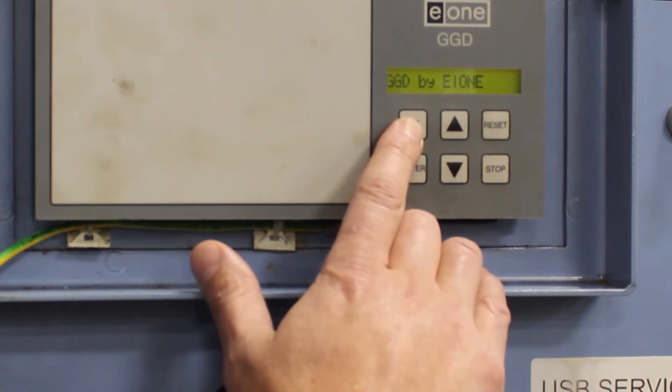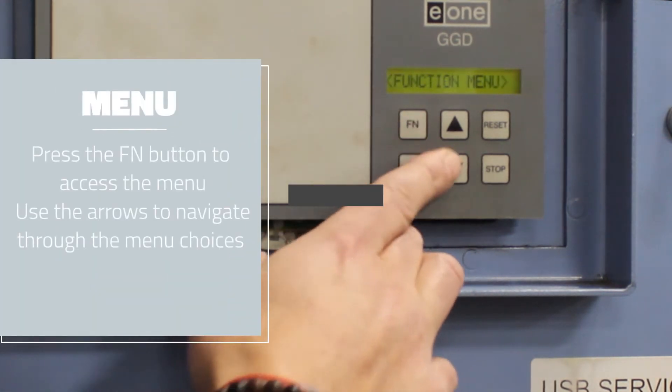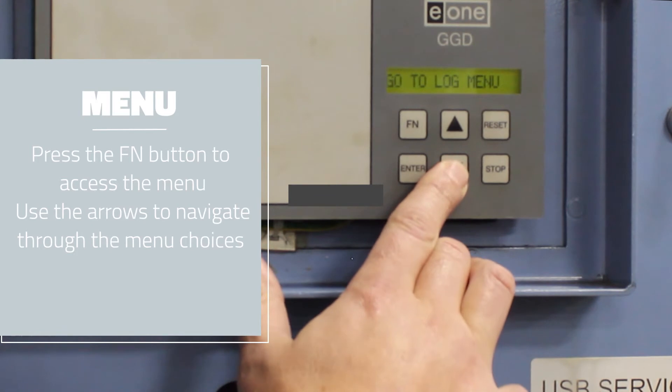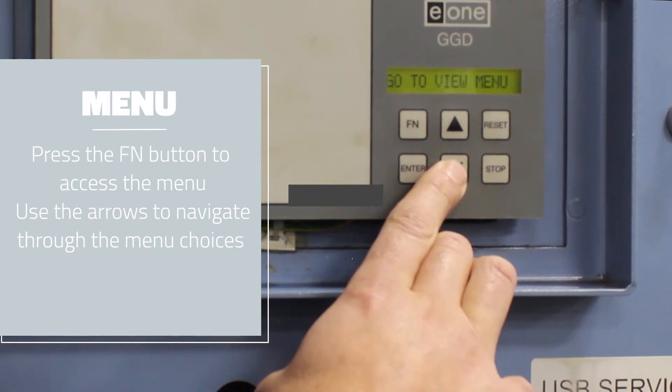To access the main menus, you press the FN or function button and then use the arrows to go up and down. Choose the Log menu, Setup menu, Test menu, Tools menu, View menu, and back to Log.